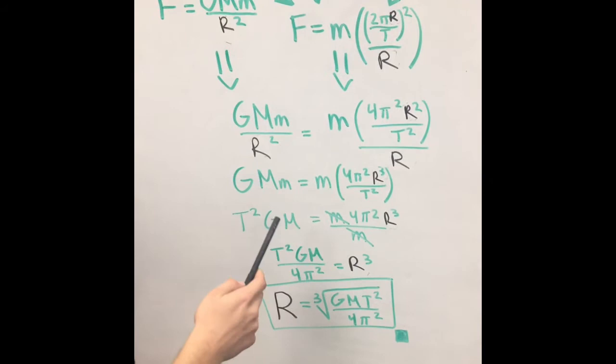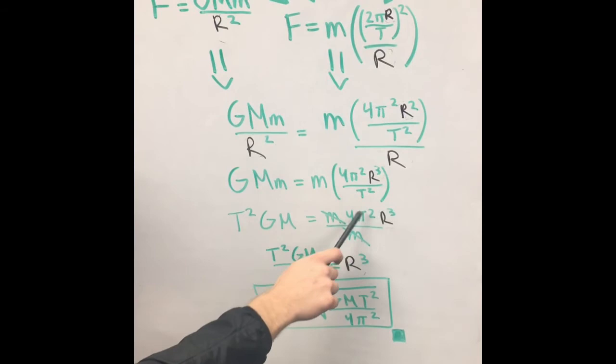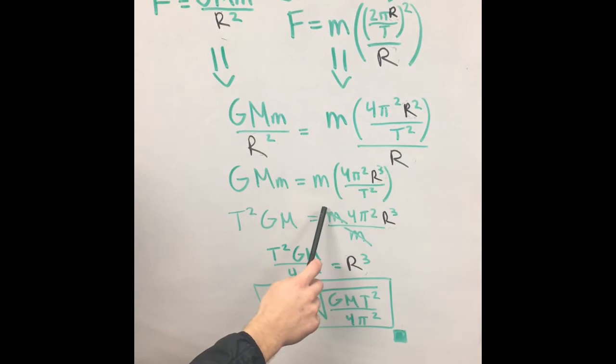So we multiply both sides by r squared, the r's cancel, and we're left with big G times big M times little m equals m times 4 pi squared r cubed over t squared. Then what we want to do is isolate this r, so we divide both sides by little m. Masses cancel on both sides.